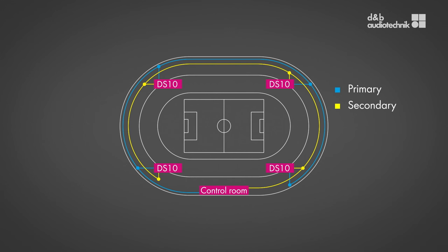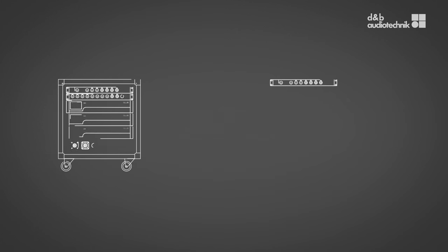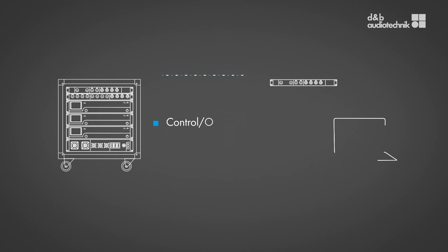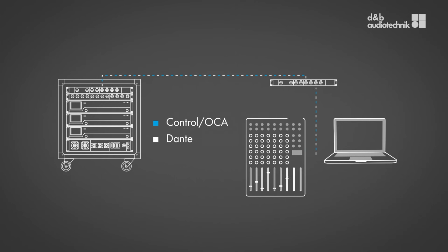Please refer to the DS10 user manual for more details. Dante can co-exist in the same network with other Ethernet traffic such as OCA, which is the remote control protocol that our amplifiers integrate. As it also features four digital input channels, the DS10 can be used at front of house as a break-in box, even if the console doesn't feature an onboard Dante interface.